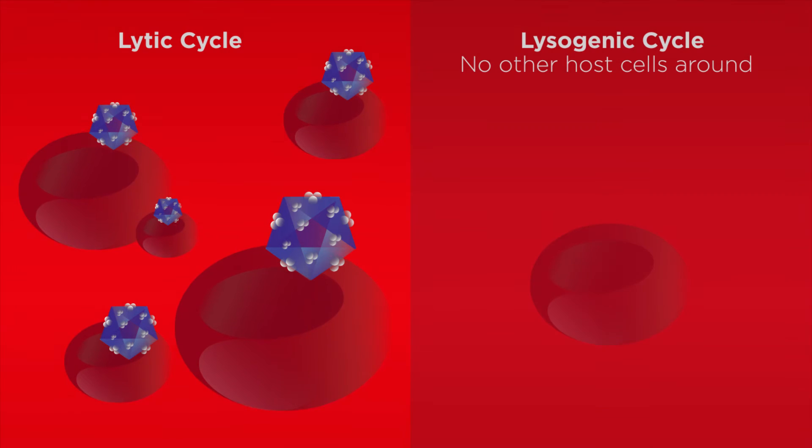However, sometimes there aren't too many other host cells nearby. Viruses are specific for different types of host cells. In this case, the slower lysogenic cycle is preferable. The virus can't risk killing its host until there are other new hosts around.